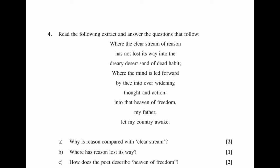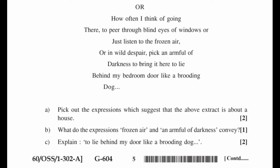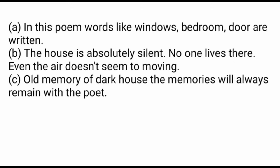Question 4: Read the following extract and answer. A. Why is reason compared with clear steam? B. Where has reason lost its way? C. How does the poet describe the heaven of freedom? Answer A: Clarity of thought is compared with clear steam. B: In the dreary desert of dead habit. C: Where the head is held high, knowledge is free, and people are open-minded and rational. OR — A. Pick out expressions suggesting the extract is about a house. B. What do 'frozen air' and 'an armful of darkness' convey? C. Explain 'to lie behind my door like a brooding dog.' Answer A: Words like window, bedroom, and door appear. B: The house is absolutely silent — no one lives there, even the air doesn't seem to be moving. C: Old memory of a dark house — the memories will always remain with the poet.